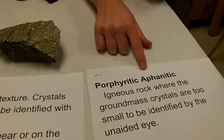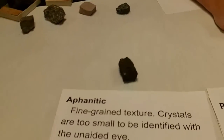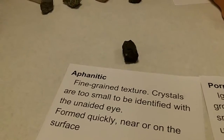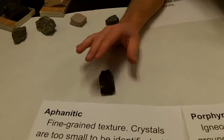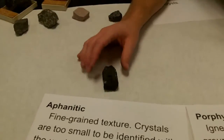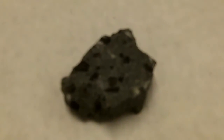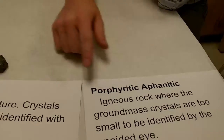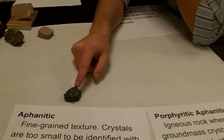How are you guys feeling? Pretty good! Let's see how you do. This one right here — aphanitic or porphyritic aphanitic? Aphanitic. Why? Because you really can't tell the crystals — it's fine-grained. Are there two sizes or one size? One size. So it's aphanitic because it's all fine-grained and crystals are too small to be seen with the unaided eye. Now this next one? Porphyritic — porphyritic aphanitic. That means two sizes, and the background ground mass — you can't see the crystal sizes.